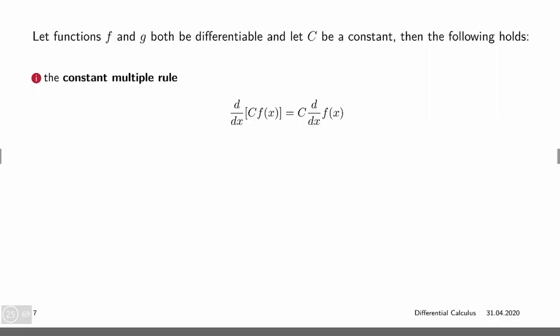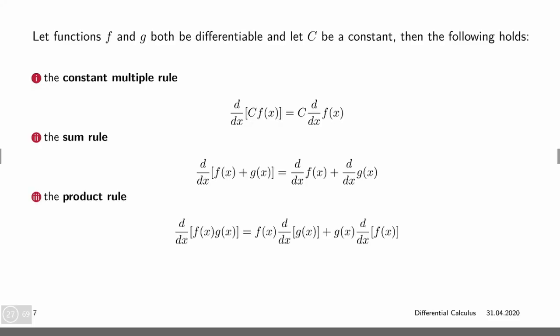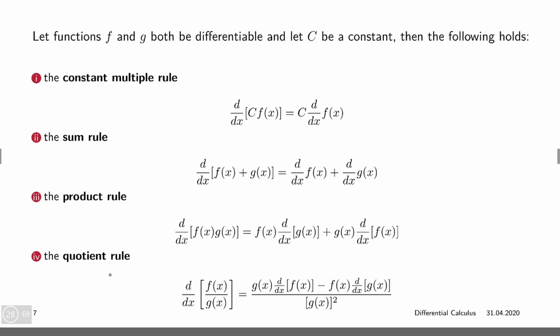Now, say we're given functions f and g that are differentiable, and c is a constant. There's the constant multiple rule: the derivative of a constant times a function equals the constant times the derivative. The sum rule: the derivative of the sum of f and g equals the derivative of f plus the derivative of g — the derivative of the sum equals the sum of the derivatives. The product rule: the derivative of the product of f and g equals f times the derivative of g plus g times the derivative of f. And the quotient rule: the derivative of the quotient of f and g equals g times the derivative of f minus f times the derivative of g, divided by g squared.